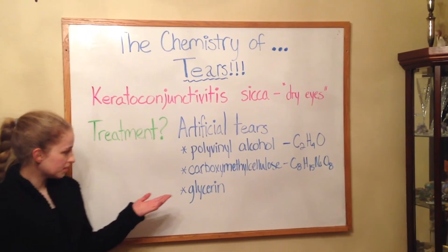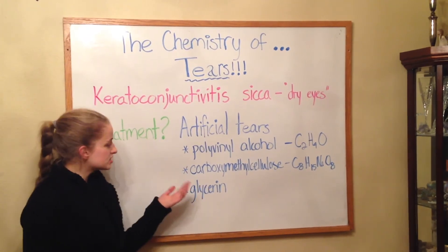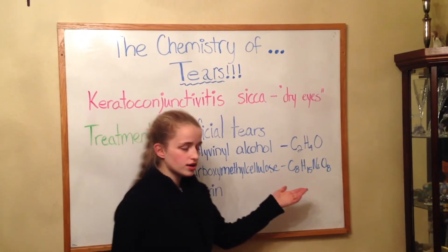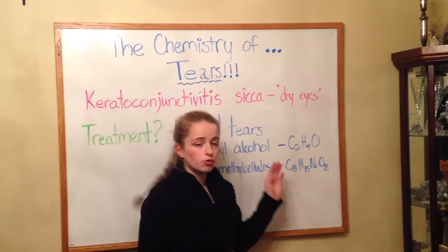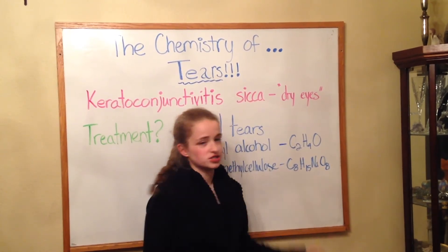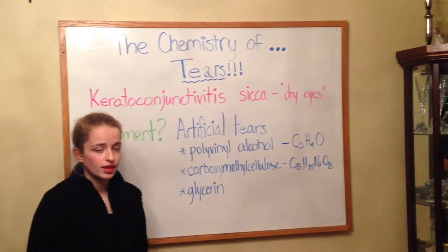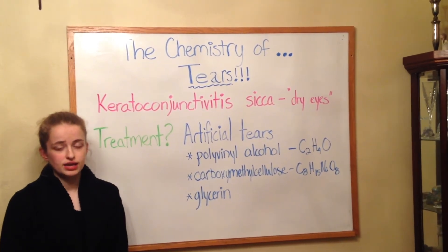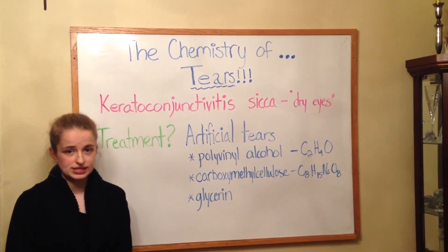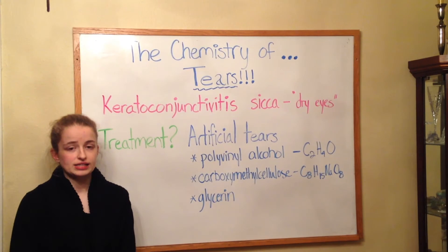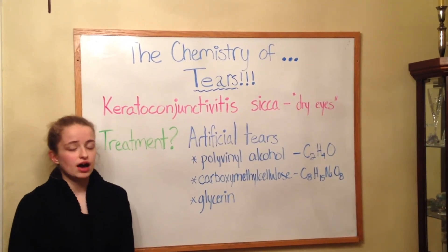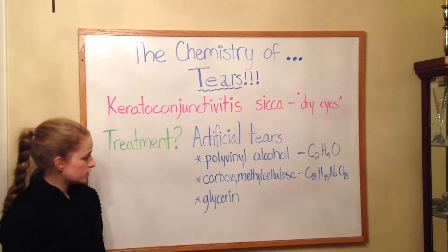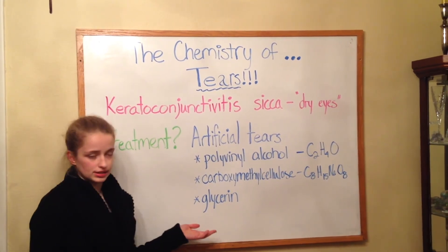The second most common component in artificial tears is carboxymethyl cellulose, which is composed of eight carbons, 15 hydrogens, one sodium, and eight oxygen atoms. Carboxymethyl cellulose is synthetic and is made using chloroacetic acid and cellulose combined in an alkali-catalyzed reaction. The third most common ingredient is glycerin.